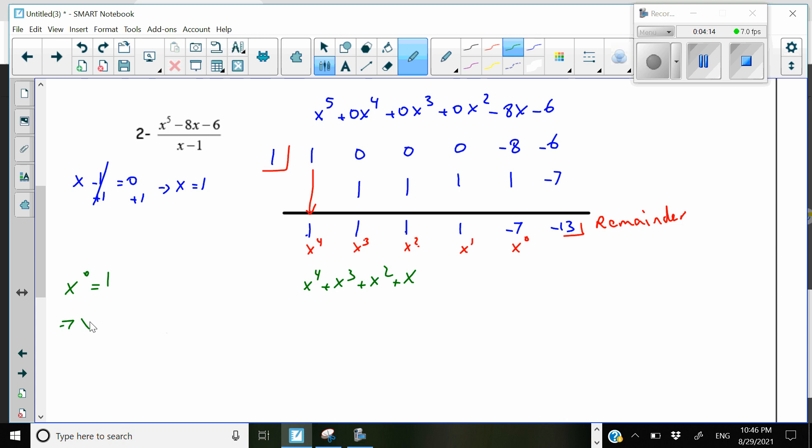So if I have negative 7 times x to 0, it's negative 7 times 1, which is negative 7. So I don't really have to write the x to the 0. I can just write as negative 7. So this is our quotient, and the remainder is negative 13.